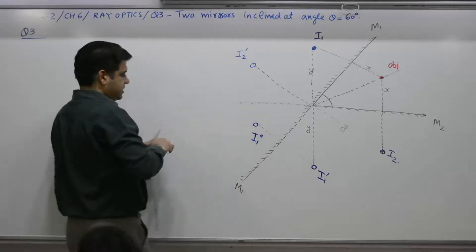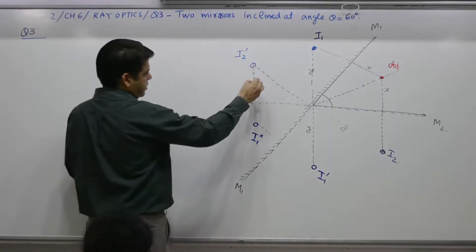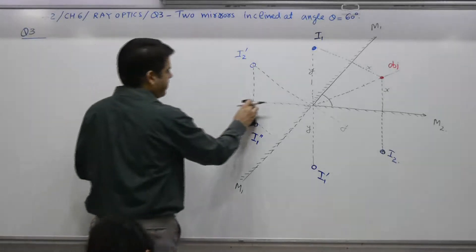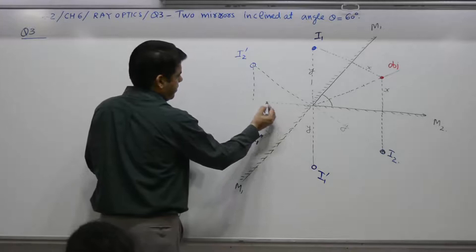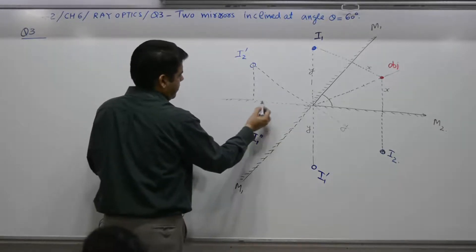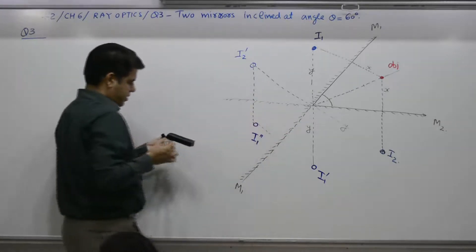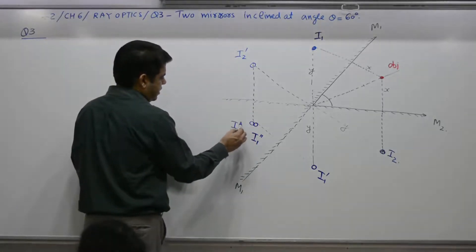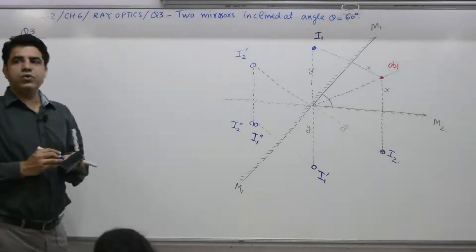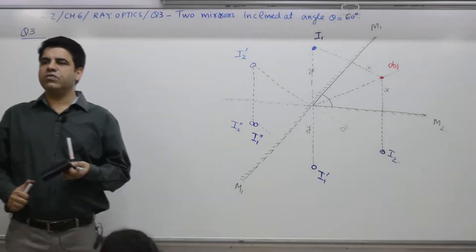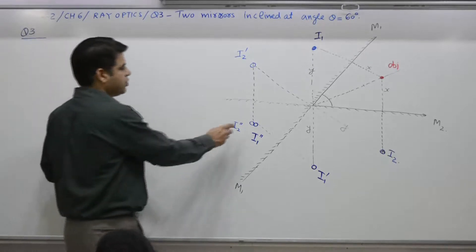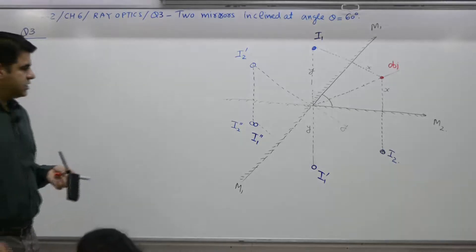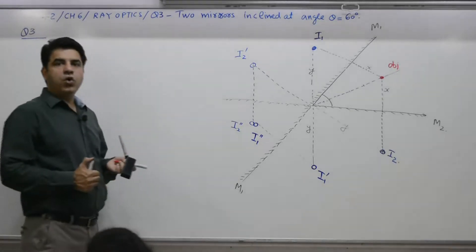What about I2 dash? Yes. Equal distance. And what you get here is I2 double dash. When you draw it to scale, measure all equal angles, you will find these two images will come out at the same place. That is, I1 double dash and I2 double dash will overlap.